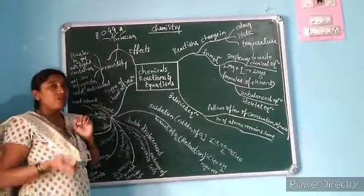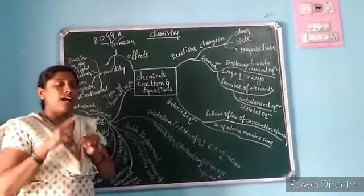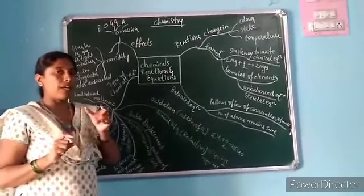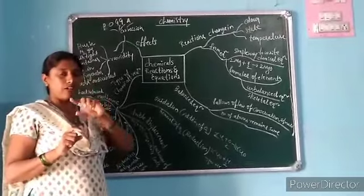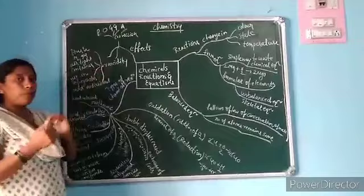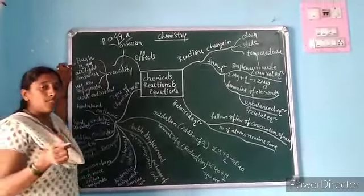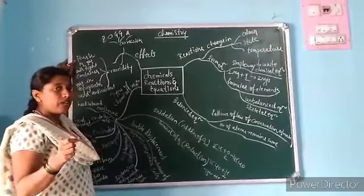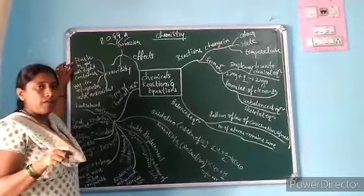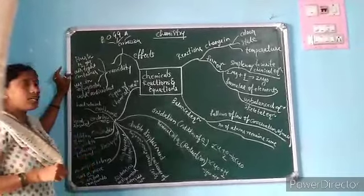Rancidity means food gets oxidized and develops a bad smell, becoming spoiled — that is called rancidity. For example, a pickle becoming tainted. How to prevent rancidity: by flushing nitrogen gas — for example, in a chips packet, the air inside is nitrogen so the chips do not spoil. Also using an airtight container.